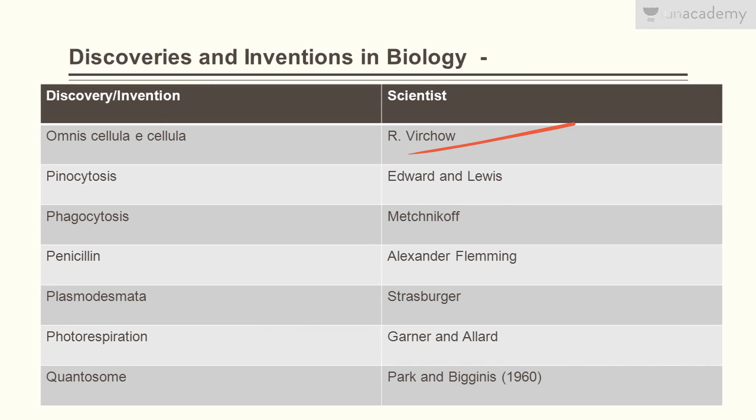The statement 'Omnis cellula e cellula' — meaning every cell arises from a pre-existing cell — was given by Rudolf Virchow. Along with this statement the cell theory was complete, so Schleiden, Schwann, and Rudolf Virchow are all three credited for giving the cell theory. The third part was given by Virchow.